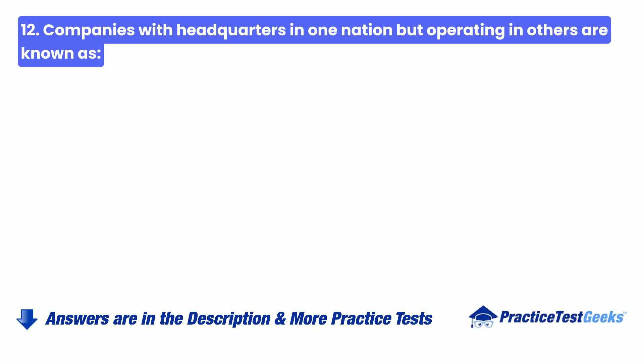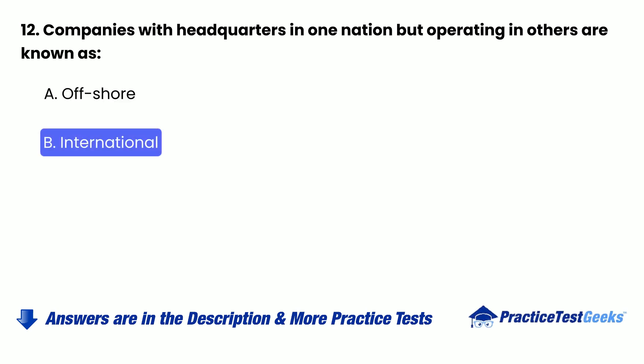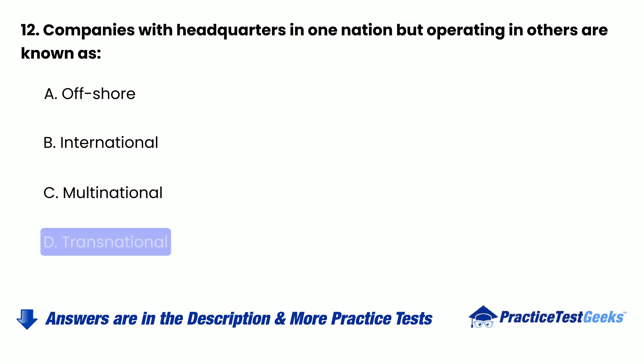Question 12: Companies with headquarters in one nation but operating in others are known as — A. Offshore, B. International, C. Multinational, D. Transnational.